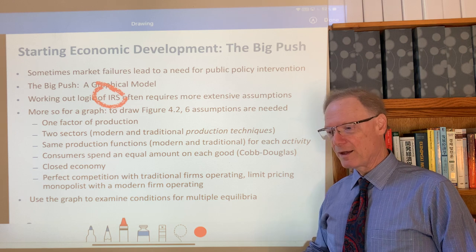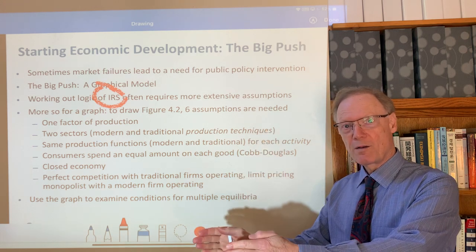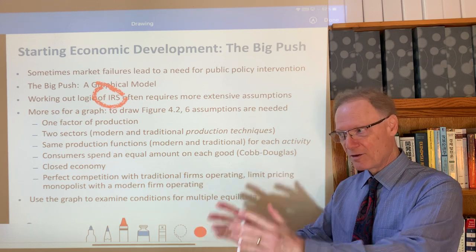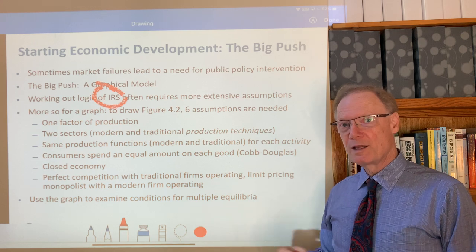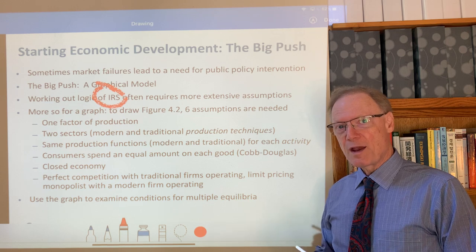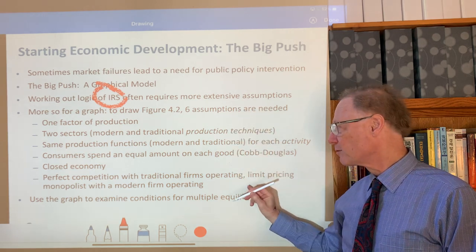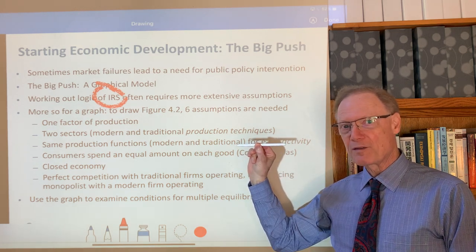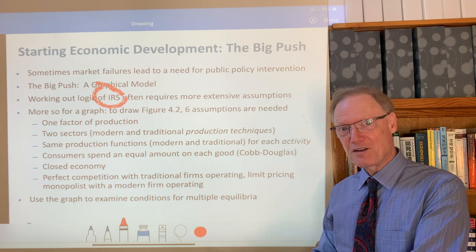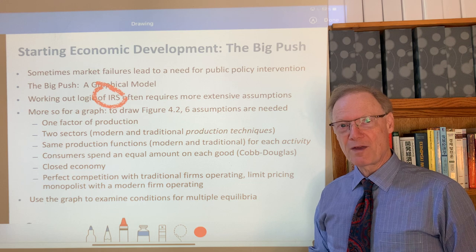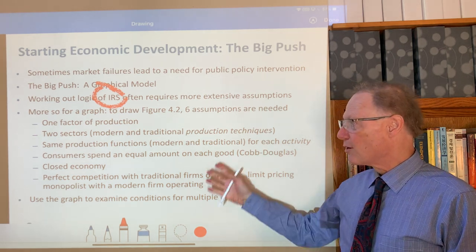Think of it like the Washington Metro — it's efficient to have one producer with increasing returns to scale throughout; you wouldn't have two underground metro lines competing down the same street. On the other hand, there are sharp limits to the monopoly power they have. This is what we call a limit pricing monopolist. Any monopolist would love to raise price to the profit-maximizing point, but our monopolist here will not be able to raise its price above what cottage industry sellers charge, because otherwise cottage producers would jump back into that activity and drive the price back down.